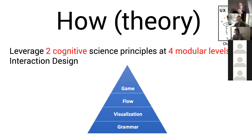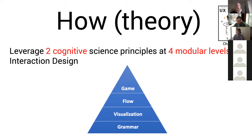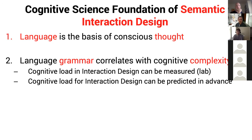Let me move to the theory part. There are two cognitive science principles I'm going to introduce you to in a moment. And there are four modular levels — more than Foley had but the same kind of idea. There's the grammar level, the visualization — those are your design patterns — flow, which somebody already mentioned, which is very important, and then optionally game theory, all of which are relevant to semantic interaction design.